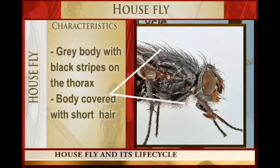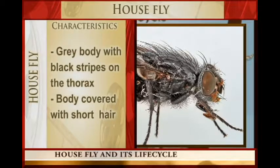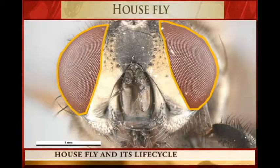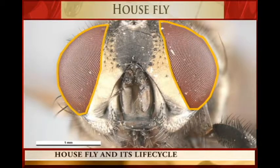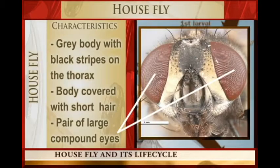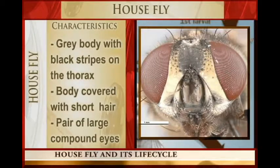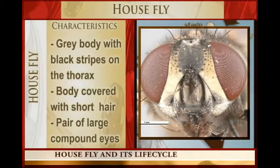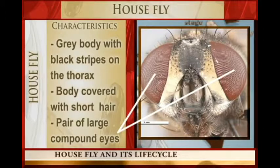Another significant characteristic that is very conspicuous is that it has a pair of large compound eyes. If you look at the house fly, one of the things that you cannot fail to observe is the pair of large compound eyes.